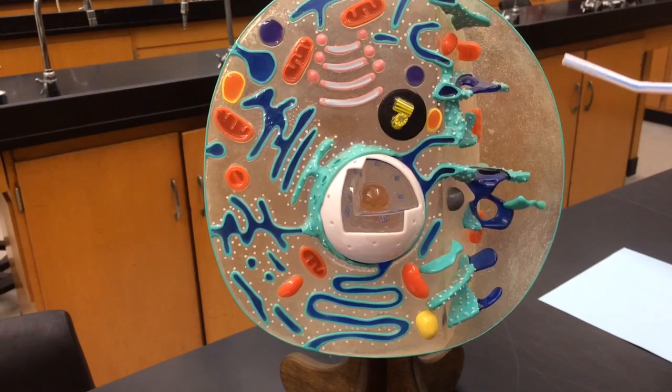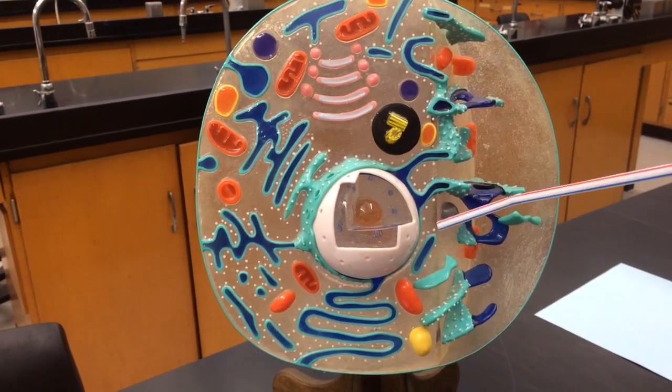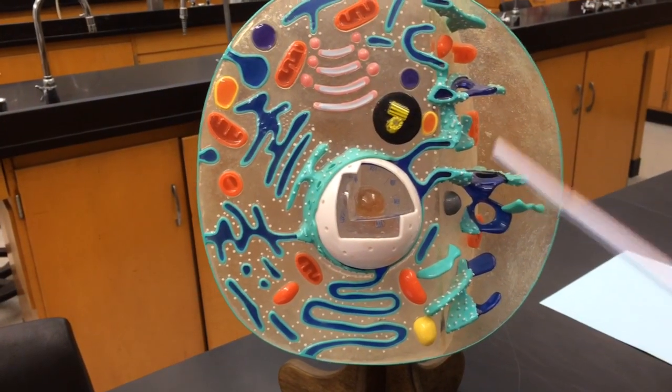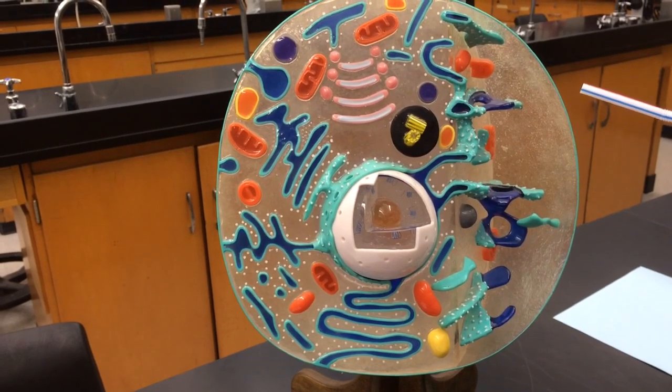First thing that you want to notice is that the cell is composed of three major components: the cell membrane, the cytoplasm, which is all of this area here, and also the nucleus. So those are the three major components of a cell.